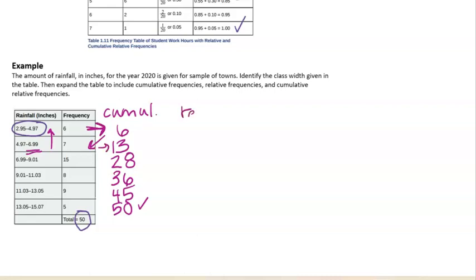All right, let's look at relative frequencies. Remember, relative frequencies mean relative to the total. What is this percent? So I could write this as a fraction. And 6 out of 50 is 12 percent, 0.12. 7 out of 50 is 14 percent. 15 out of 50 is 30 percent. So just under a third of these towns had about 7 to 9 inches of rainfall.